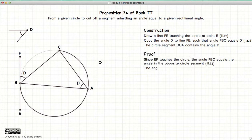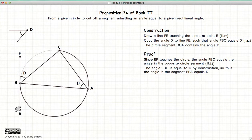Now to prove this, well, since EF touches the circle, the angle FBC is equal to the angle in the opposite circle segment, BAC, according to Proposition 32 of Book 3.